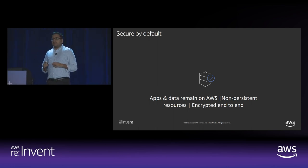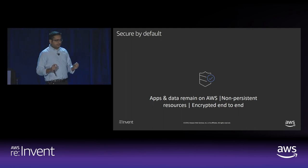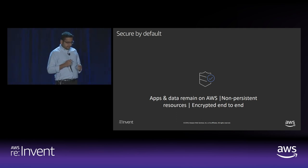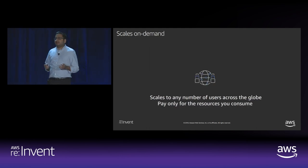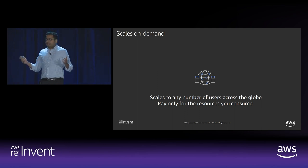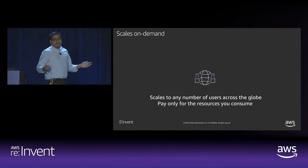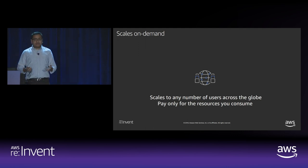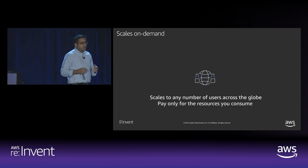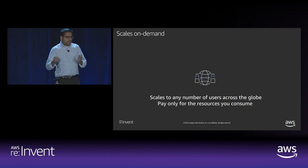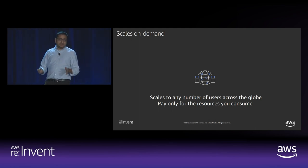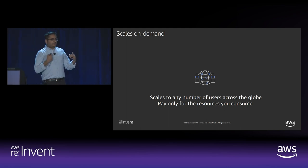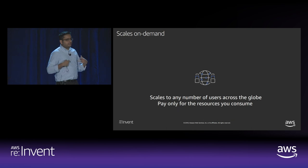AppStream instances are non-persistent by nature. Every user session is supported by a dedicated fresh instance, and at the end of the session that instance is terminated. When the user starts a new session, they get a brand new instance. The service scales on demand — you can start with 10 instances supporting 10 concurrent sessions and instantly scale to thousands of users across the globe. You only pay for the resources you consume. You can build a streaming environment, use it for 10 days for a training workshop or enterprise demo, then shut it down. There's no pre-planning, no forecasting, no over-provisioning — unlike traditional models where you must procure all necessary hardware or VDI infrastructure.